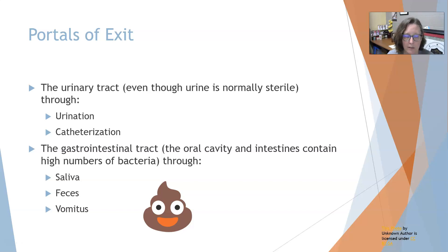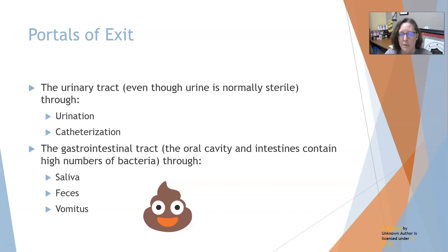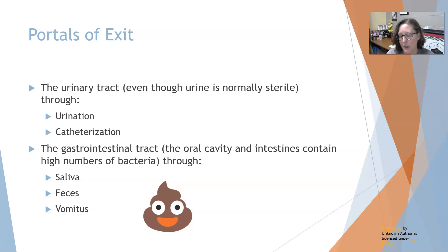The respiratory tract is definitely the portal of exit for many things, especially common cold viruses and flu. The urinary tract — even though urine is normally sterile — if there's an infection, bacteria can exit through urination or catheterization. The GI tract is another portal, as the oral cavity and intestines contain a high number of bacteria. For example, if somebody bit somebody else, bacteria from the mouth can get deep into tissue and cause problems. If people don't wash their hands properly after using the bathroom, traces of feces can contaminate food.